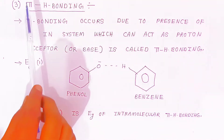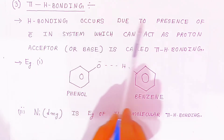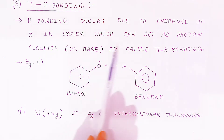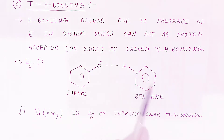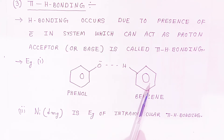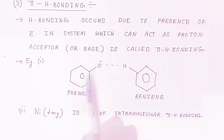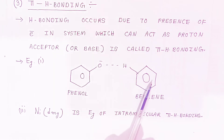There is one more type: pi-hydrogen bonding. Pi hydrogen bonding occurs due to the presence of pi electrons in the system which can act as a proton acceptor or base. For example, consider phenol and benzene — in benzene you have pi-type proton acceptors. Because pi electrons are present in benzene, there is formation of intermolecular hydrogen bonding due to pi electrons, which is why it is called pi hydrogen bonding.